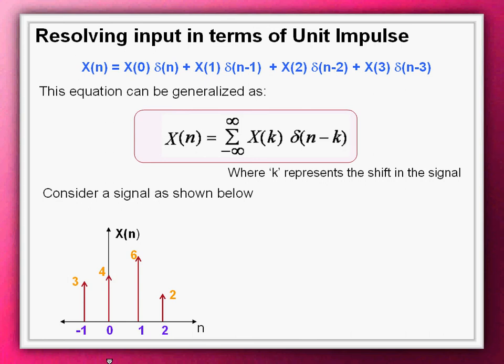Let us verify your answer. Begin with the sample at 0. This sample can be resolved as 4 times delta(n), where 4 is the value of that sample.